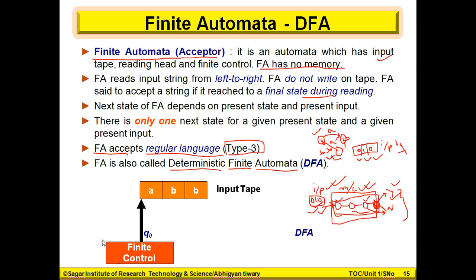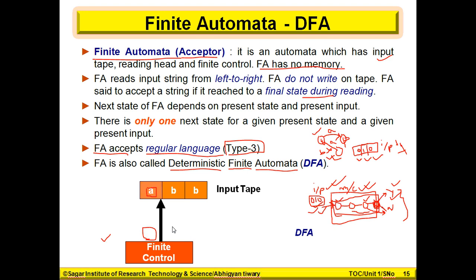This is the finite control — the brain — which is initially at state Q0. It is going to read input A. After taking input A, it decides to move right and the state becomes Q1. So it changed its state from Q0 to Q1 after reading A. Now it is in state Q1 and it is going to read B. After taking B, it changes state from Q1 to Q2.